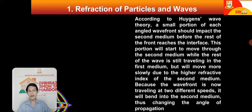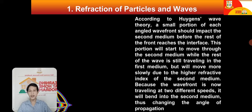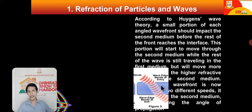For example, a pencil placed in a glass full of water appears bent. Similarly, our feet in a pool, pail, or bathtub appear cut off, larger, or bent. That is the explanation of the wave theory — light rays bend when traveling through different media.